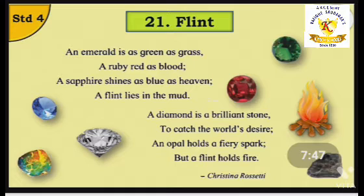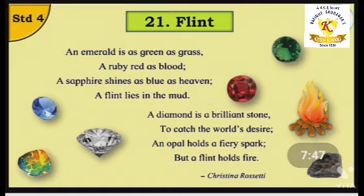I hope you all have understood the meaning of today's poem, Flint. Now recite the poem along with me: An emerald is as green as grass, a ruby red as blood, a sapphire shines as blue as heaven, a Flint lies in the mud. A diamond is a brilliant stone to catch the world's desire, an opal holds a fiery spark, but a Flint holds fire.